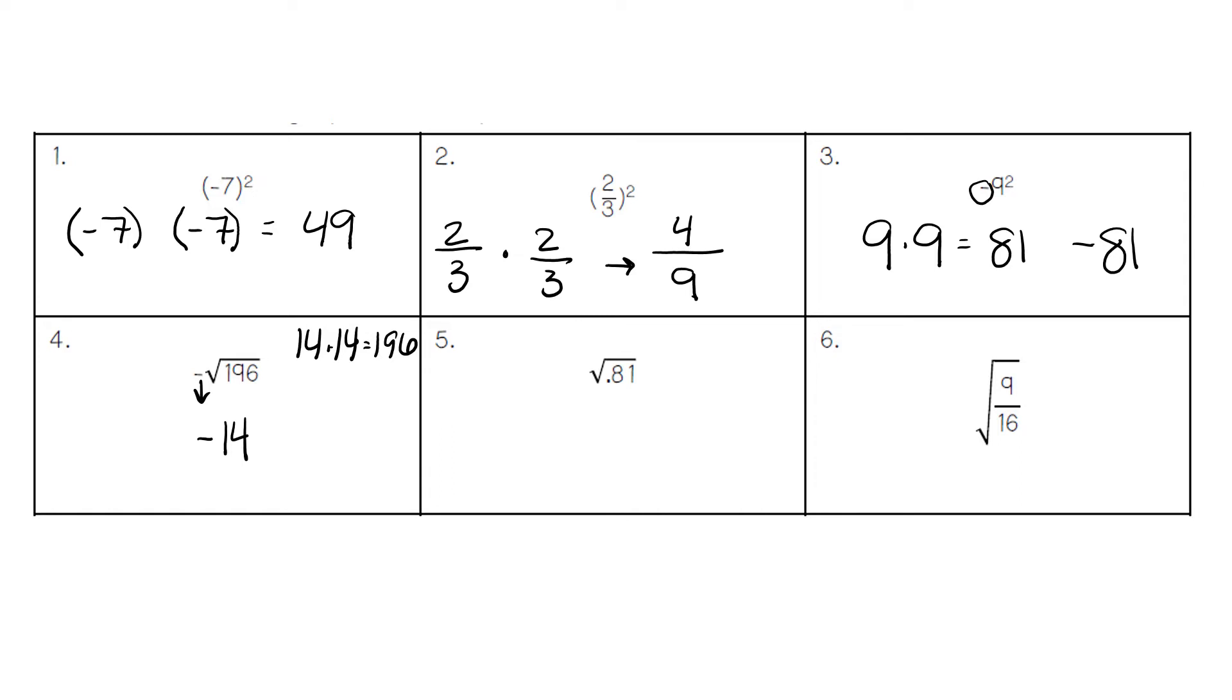In number five, we have the square root of 0.81. We know that nine times nine is 81, so we have 0.9 as our answer.